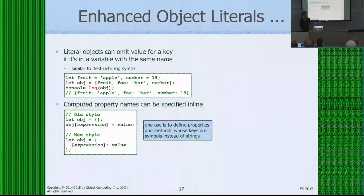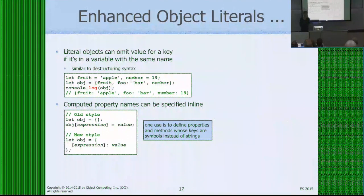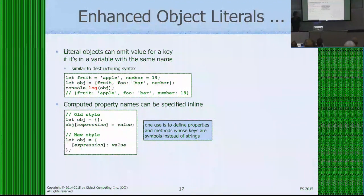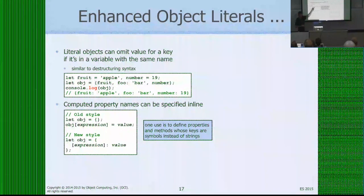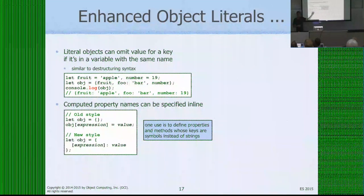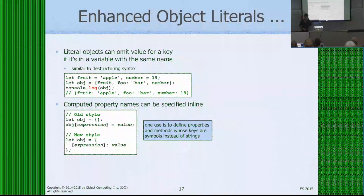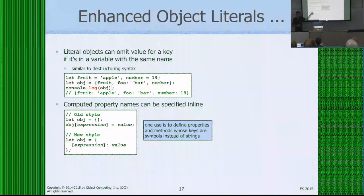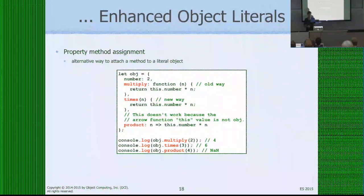There's also a new way to set properties where the key is an expression. In the old style, you'd start with an empty object and use bracket notation to set a computed key. In the new way, you write it as part of the object literal using square brackets around the expression in the key position. This is also useful when the key is going to be a symbol, such as `Symbol.iterator`, as we'll see later.